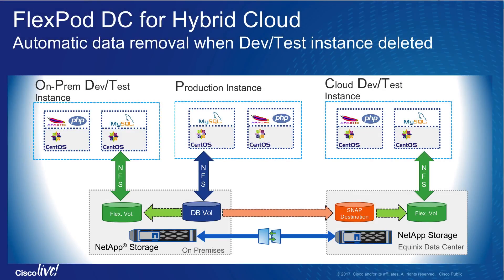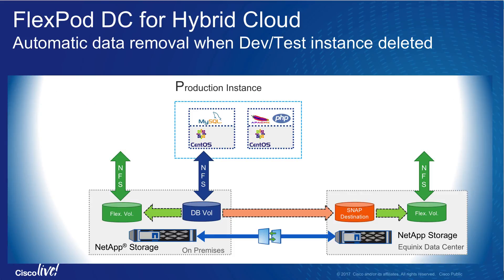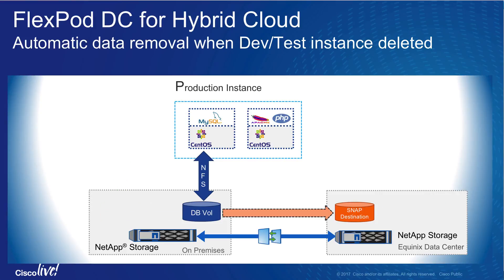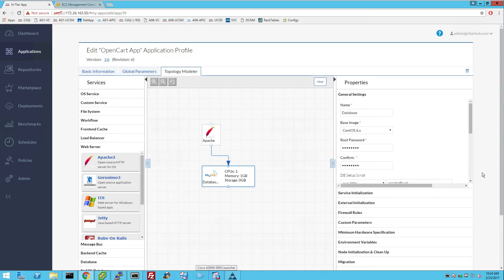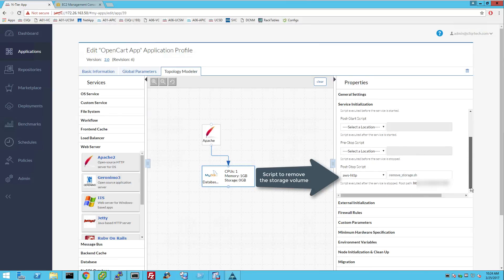FlexPod solution for hybrid cloud automatically performs data cleanup when application instances are no longer needed. Customer critical data copies are destroyed for additional security as soon as application instances are deleted. Scripts orchestrated through Cisco Cloud Center access the appropriate NetApp controller and delete the FlexVolume associated with the application instance. The clean-up script is executed when the database services are stopped and the database VM is about to be deleted by Cisco Cloud Center.